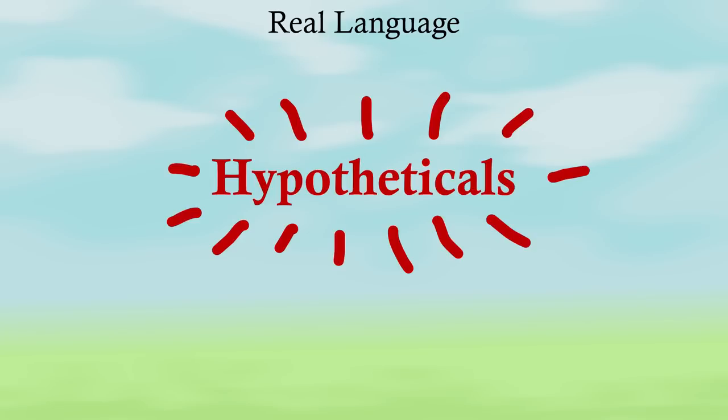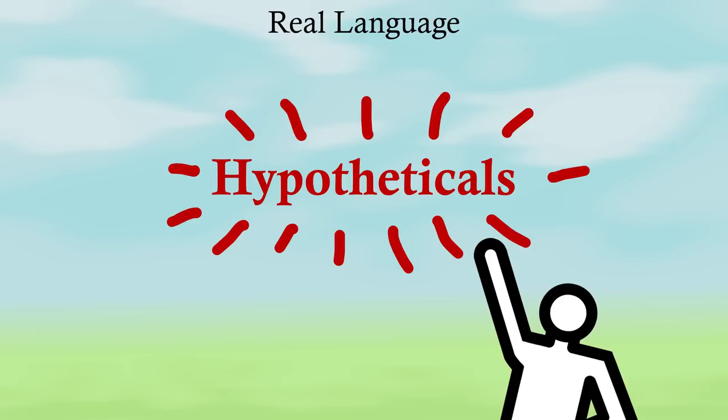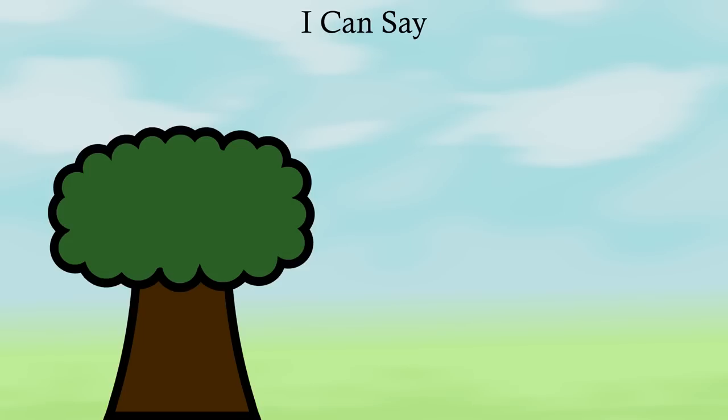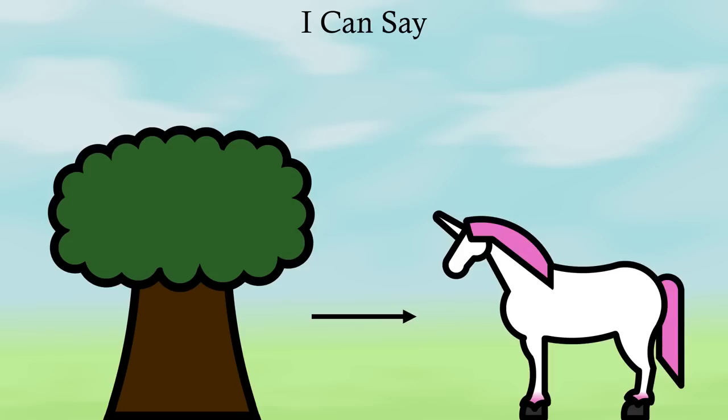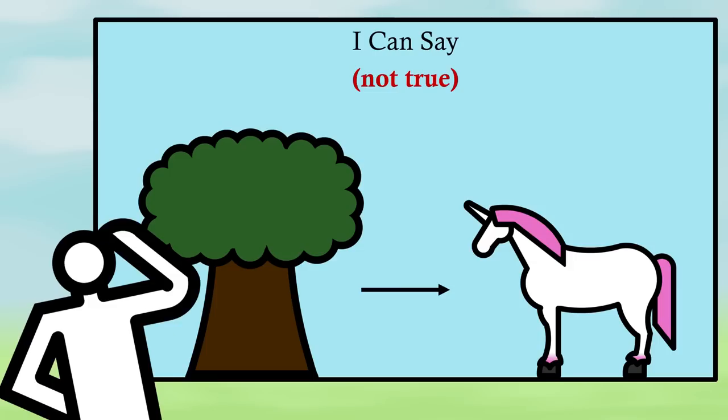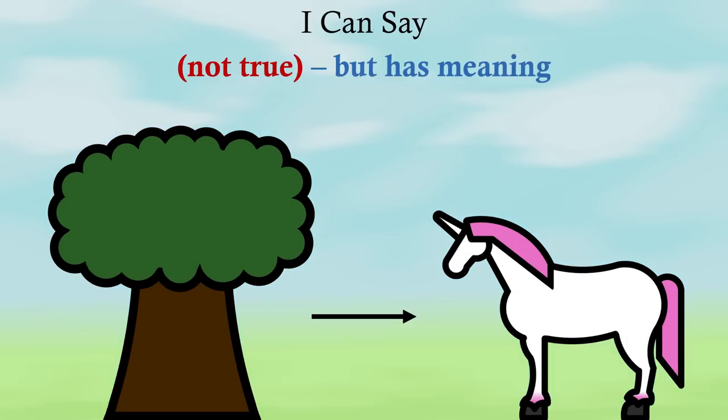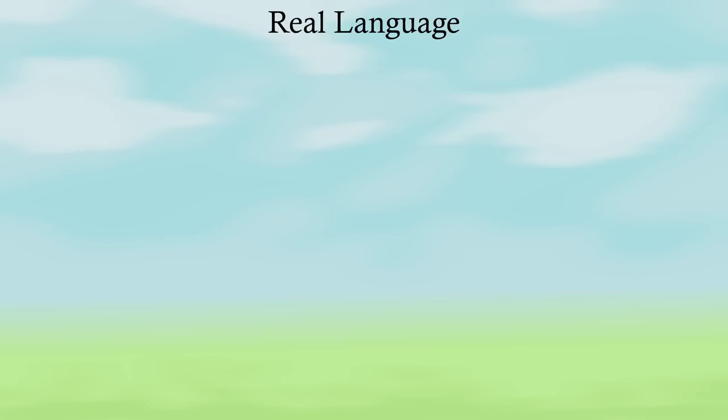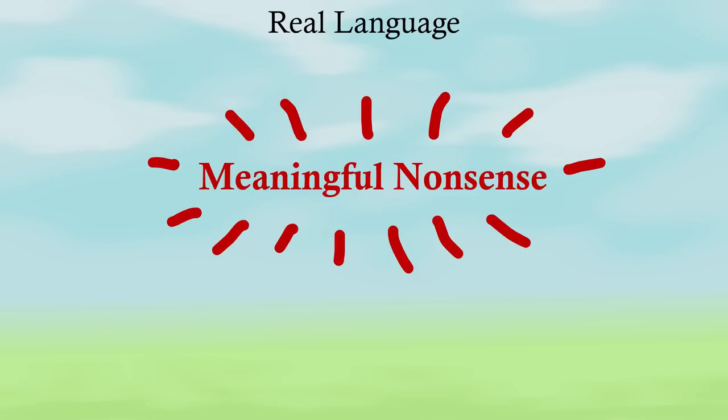But language, real language, can account for hypotheticals. Language can be arranged to express things that could never possibly happen. I can say the tree in my back garden is going to turn into a magical unicorn in the next three days, and though that's not true, I think, that sentence still means something. That's my definition. If it's a real language, you can use it to express meaningful nonsense.